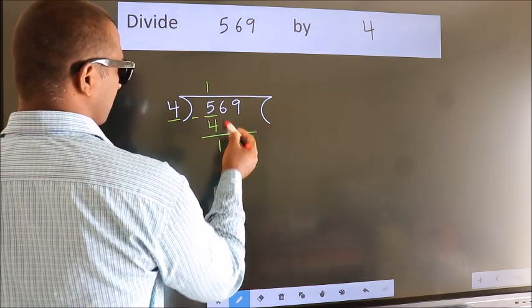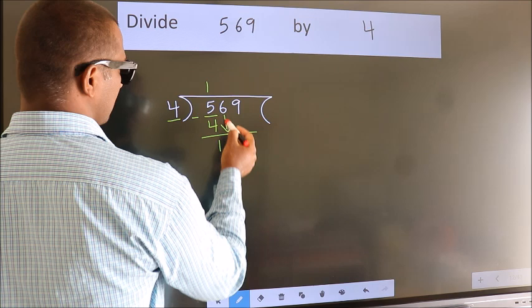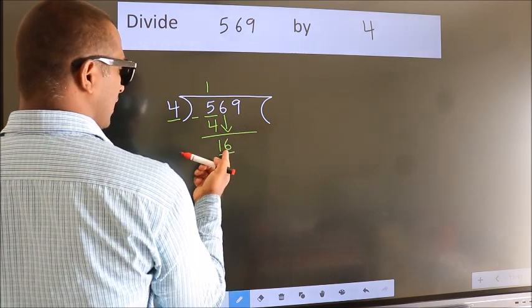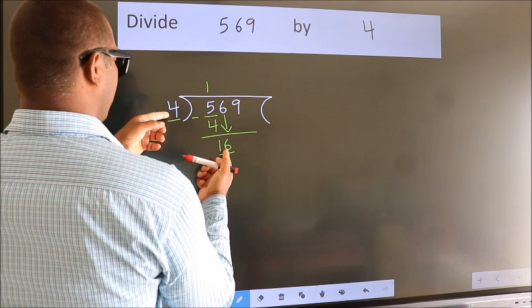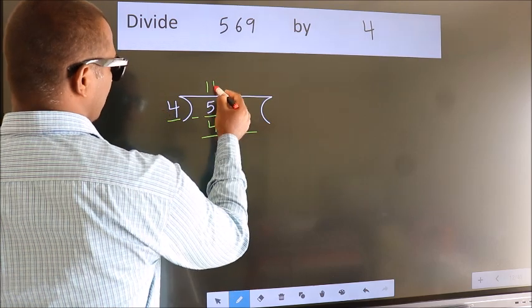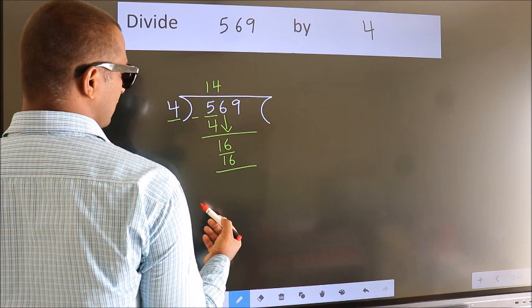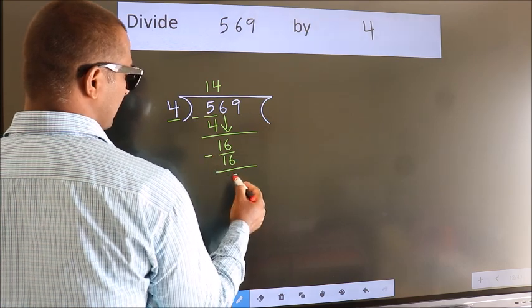After this, bring down the beside number. So 6 down. So 16. When do we get 16? In 4 table. 4 fours, 16. Now we subtract. We get 0.